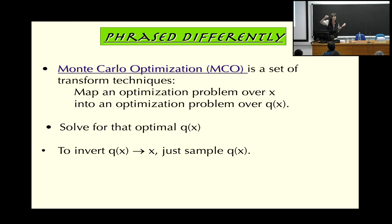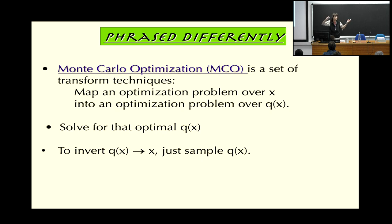Once you solve for that optimal q of x, eventually it would collapse down to a delta function. But even before you get to that point — like in something like simulated annealing — you'll have a broader distribution. And to invert at any point in your process, to go back from your transformed distribution to the original data point, you just sample the distribution.